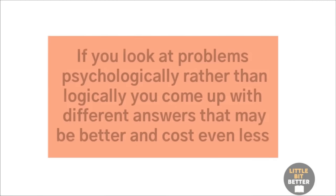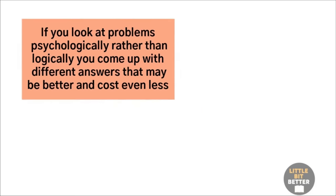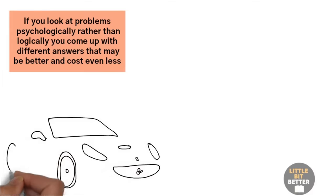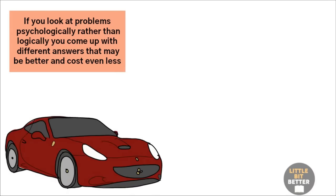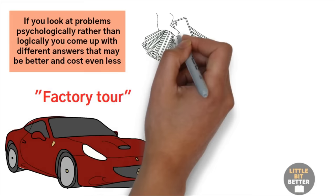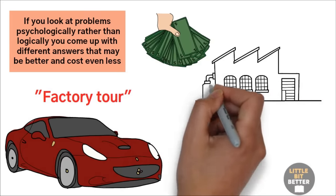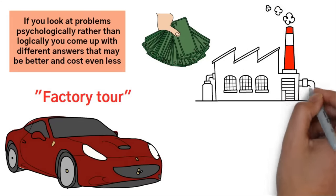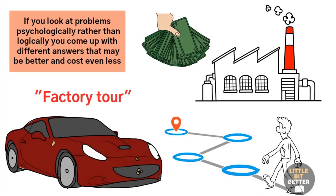If you look at problems psychologically rather than logically, you come up with different answers that may be better and cost even less. For example, in the UK, if you buy a Ferrari, they'll deliver it to your local dealership for free, which is pretty cool. But there's also a second option. They call it the factory tour. Here's how it works: You pay £500 to visit the Ferrari factory, and you have to travel at your own expense. But get this, at the end of the tour, you get to drive your brand new Ferrari off the factory lot and take it home. So what they have done has nothing to do with reality. Reality hasn't changed at all. But by calling it a tour of the factory, they've gotten you to pay £500 and pick up your own car.